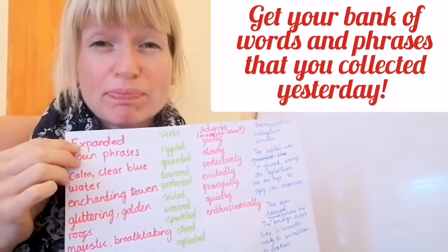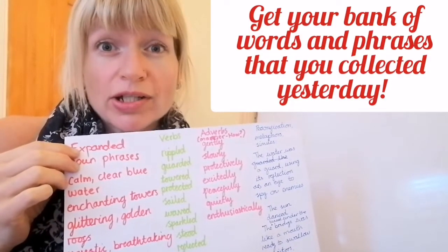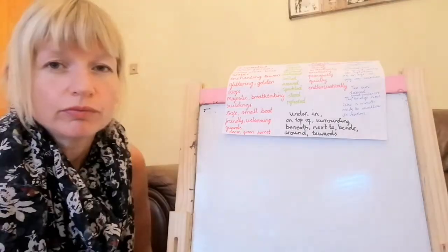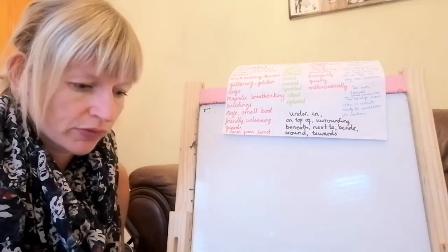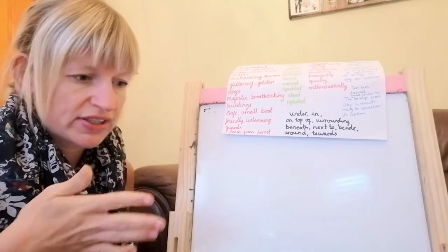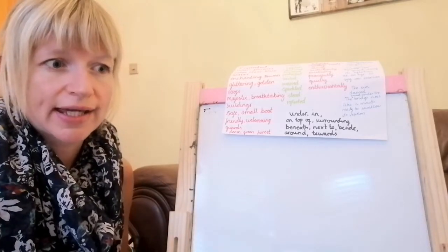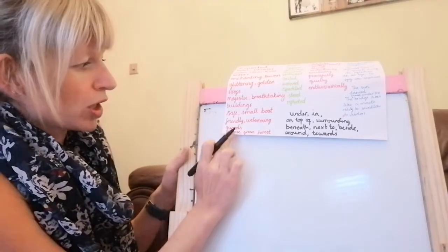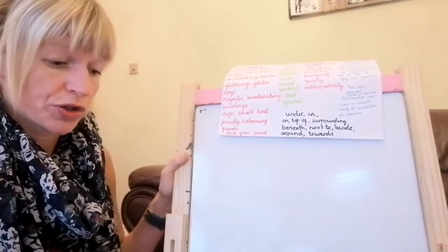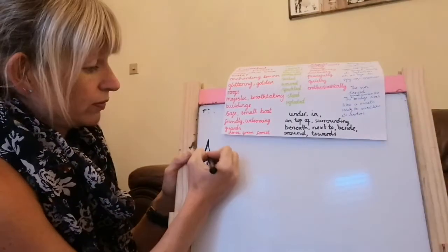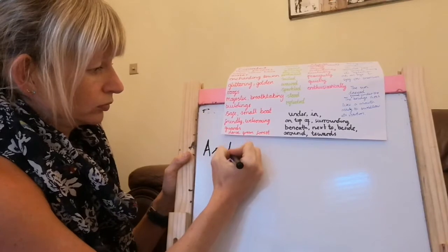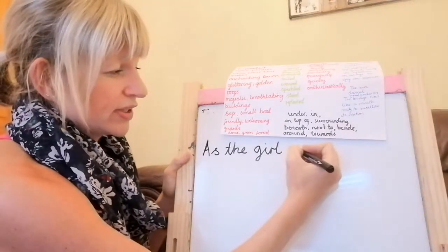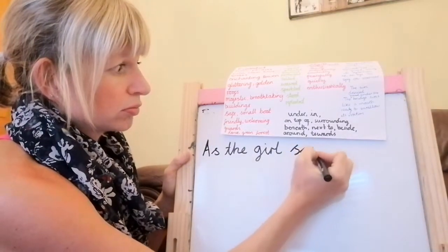Now I'm going to use this bank of words and phrases to help me write my descriptive piece of writing. Have you got yours ready? So how can we start? The girl sails towards this new landscape and where she's come from — she's come from the forest. So I'm going to use my dense green forest to start us off. What was she doing? Sailed.